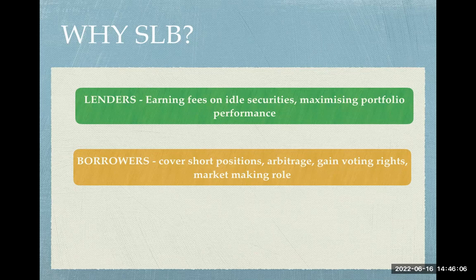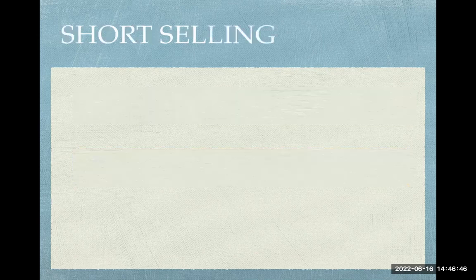Borrowers are interested in covering short positions. Arbitrageurs take advantage of price differences across two different markets. Activist shareholders want to gain voting rights for a short period, so they borrow shares just around the AGM or EGM record date and return them afterward. Large investment banks acting as market makers cannot refuse deals, and because of excessive selling, can end up with short positions that require securities delivery.